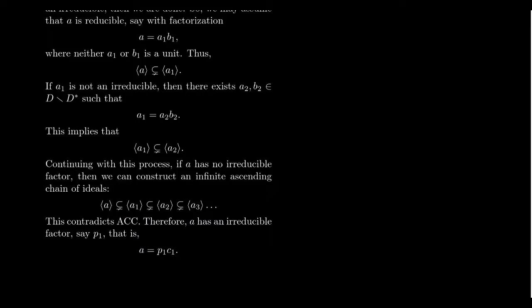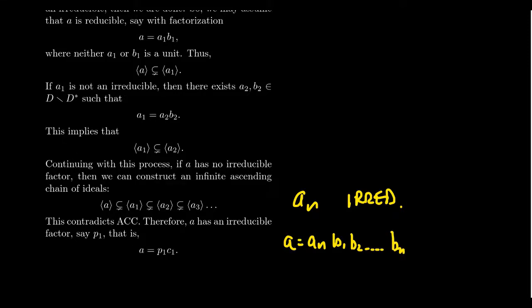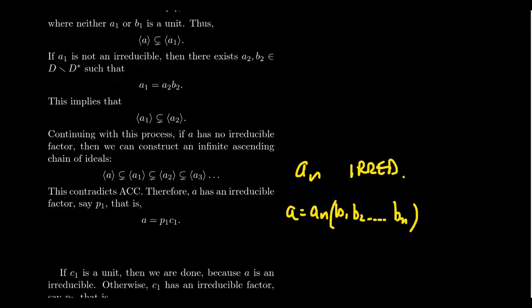An infinite ascending chain that never stabilizes is not possible in a principal ideal domain because PIDs are Noetherian. Noetherian rings satisfy the ascending chain condition by definition. Therefore, at some point this process must stabilize, and one of these factors — some Aₙ — must in fact be irreducible. So A factors as Aₙ · B₁ · B₂ · … · Bₙ, where Aₙ is irreducible. We'll call this irreducible factor P₁ — thinking of it as a prime element — since in a PID, primes and irreducibles are the same thing. This proves A has an irreducible factor.